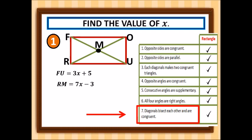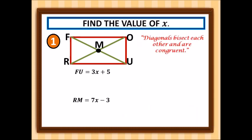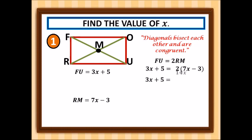Since the diagonals bisect each other, FU equals twice RM — because RO goes from RM to MO, making the full diagonal twice RM. So we set up: 3x + 5 = 2(7x − 3). Distributing the 2 gives 3x + 5 = 14x − 6. Then 3x − 14x = −5 − 6, which gives −11x = −11.